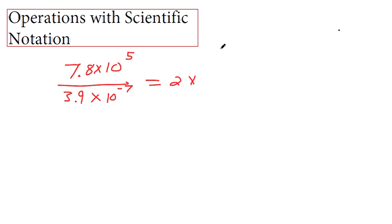And so, if you have 5 subtracted by negative 7, then you're subtracting a negative. So, you're adding. So, it'll be 10 to the 12th.